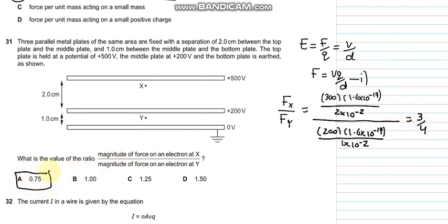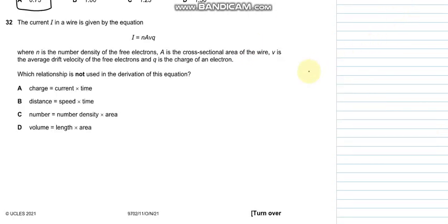Question number 32 says that current I is given by the equation I equals nAvq: n is the number density of the free electrons, A is the cross-sectional area, v is the drift velocity, q is the charge on electron. Which relationship is not used in the derivation of this equation? The equation derivation consists of number of electrons equals the charge density multiplied by volume.